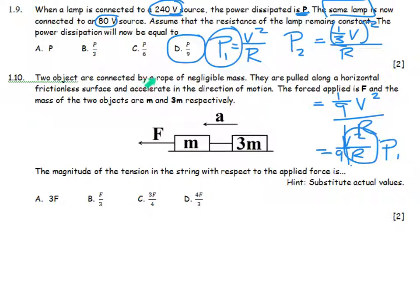Two objects are connected by a rope of negligible mass. They are pulled along a horizontal, frictionless surface, and they accelerate in the direction of motion. The force applied is F, and the masses are M and 3M, respectively. What is the magnitude of the tension in the string? I found it easier to do this using real values. So what if we say this is 10, and this is 10, and we're accelerating at 3? I don't know if it's 3, I need to work out what it is, because I've got a mass over there.